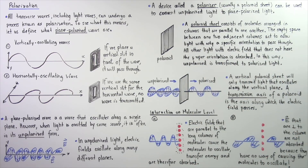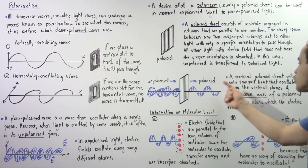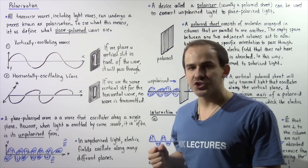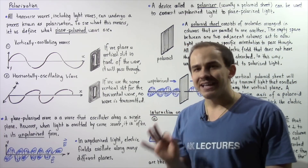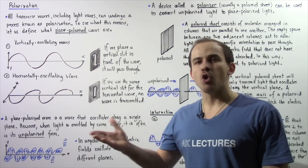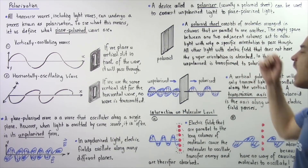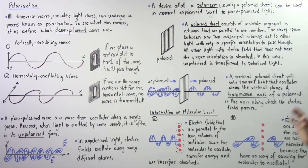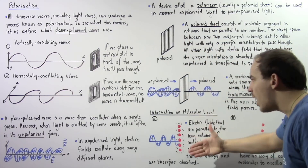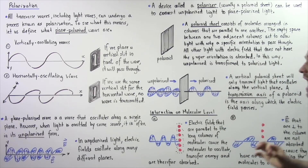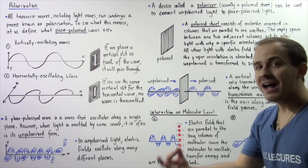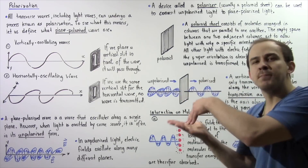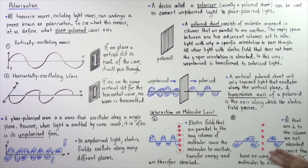An important point: the transmission axis of any polaroid sheet is always perpendicular to the orientation of the column of molecules. So if the transmission axis lies along the y-axis, the columns of molecules lie along the z-axis — perpendicular to one another.